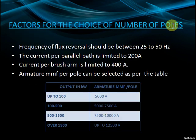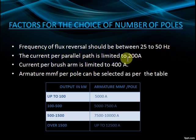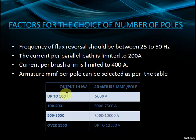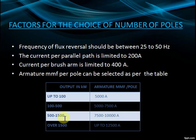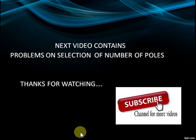Factors for the choice of number of poles: frequency of flux reversal should be between 25 to 50 Hz; current per parallel path is limited to 200 amperes; current per brush arm is limited to 400 amperes. Armature MMF per pole guidelines: up to 100 kW — 5000 A; 100 to 500 kW — 5000 to 7500 A; 500 to 1500 kW — 7500 to 10,000 A; over 1500 kW — up to 12,500 A. The next video contains problems on selection of number of poles.